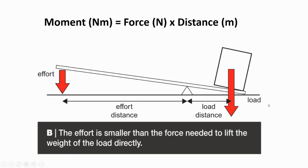This is shown using the equation for turning force or moment: Force times distance, where the force is the downward effort applied to the lever and the distance is the distance between the applied force and the pivot. This produces a moment.